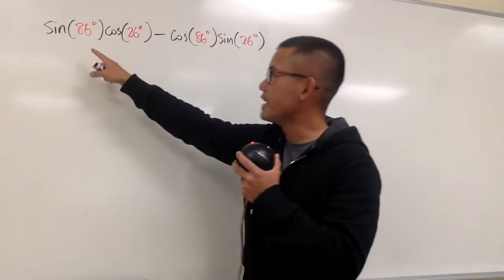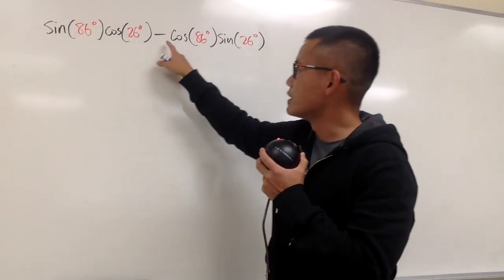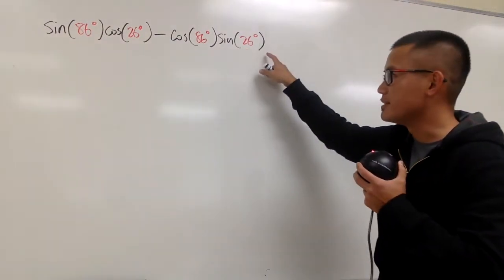Okay, we'll compute this right here: sine of 86 degrees times cosine of 26 degrees minus cosine of 86 degrees times sine of 26 degrees.